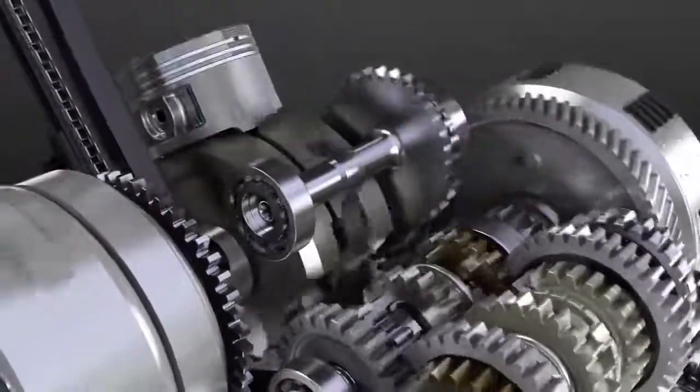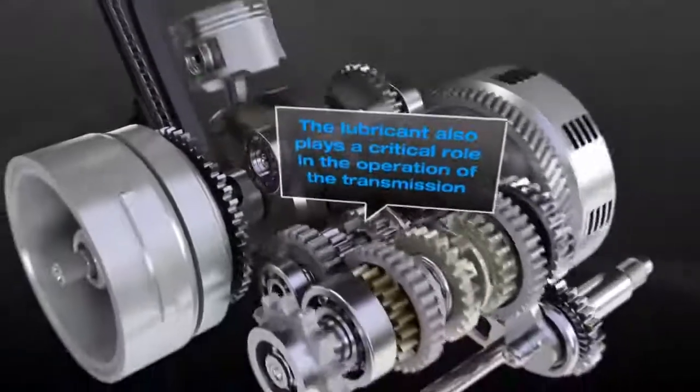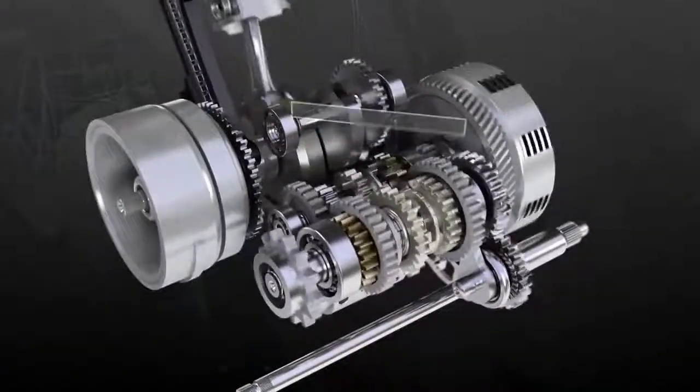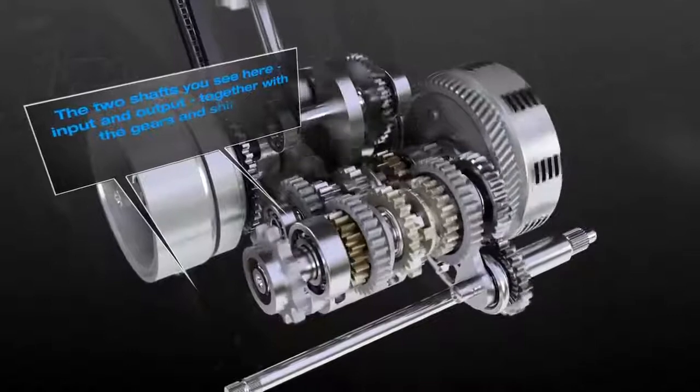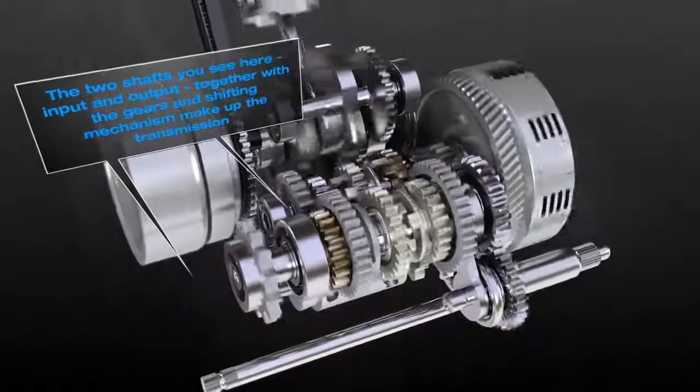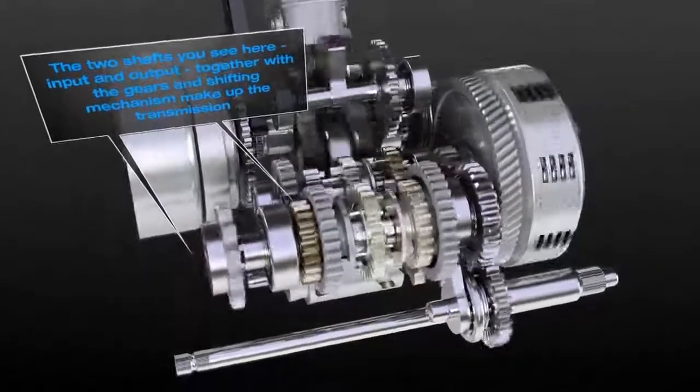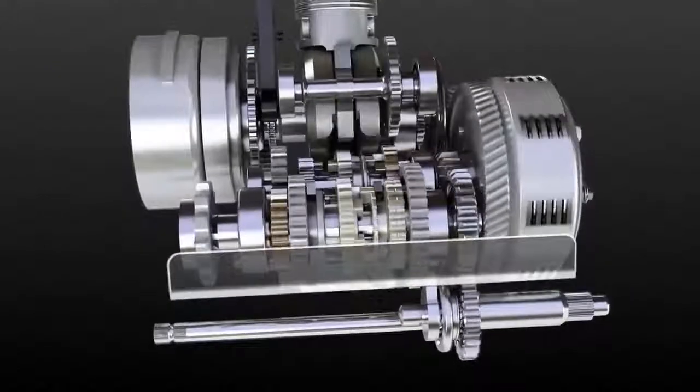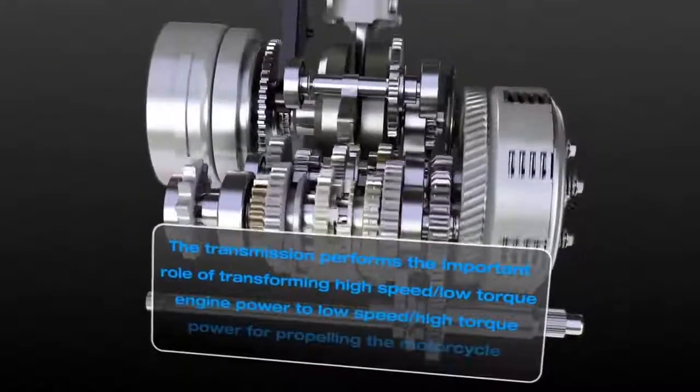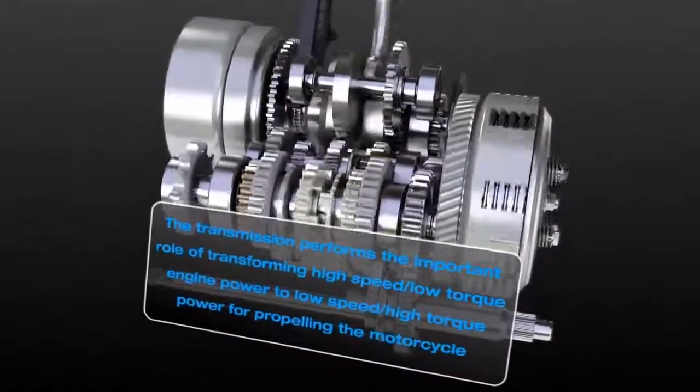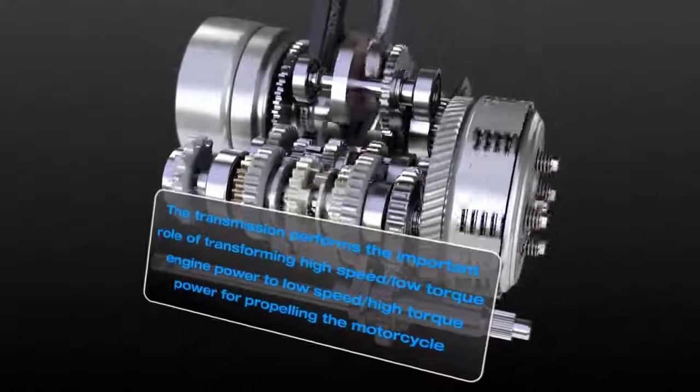The lubricant also plays a critical role in the operation of the transmission. The two shafts you see here, input and output, together with the gears and shifting mechanism, make up the transmission. The transmission performs the important role of transforming high speed low torque engine power to low speed high torque power for propelling the motorcycle.